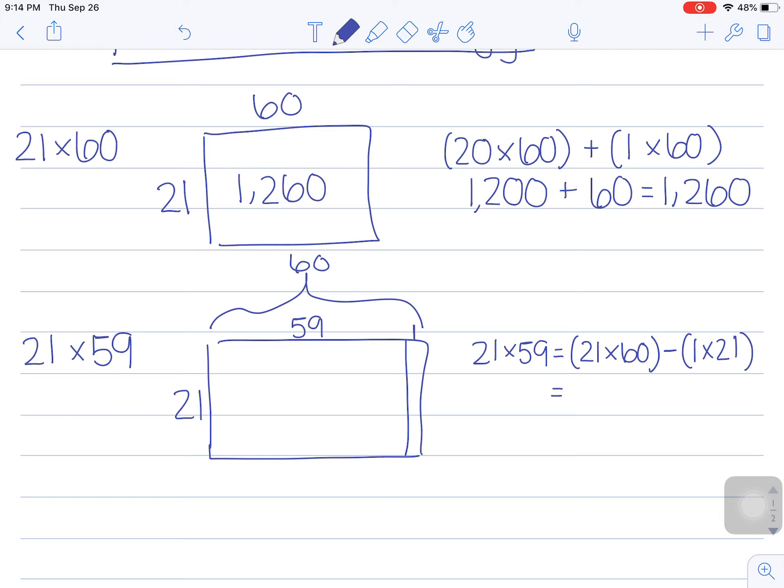I'm going to subtract a group of 21. Going back, I know that 21 times 60 is 1260, and I know that if I subtract a group of 21, I'm going to get 1239. I'm going to go ahead and write that in here.